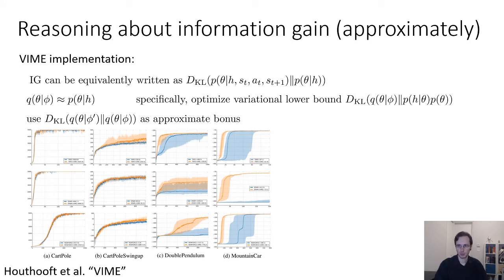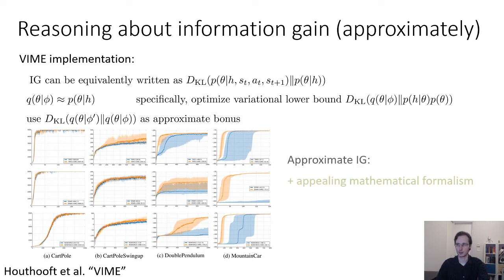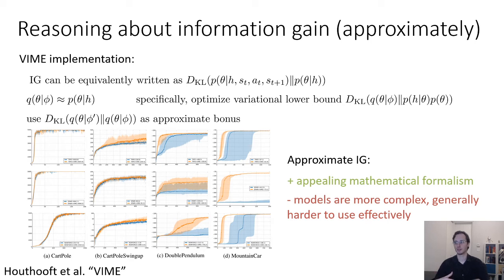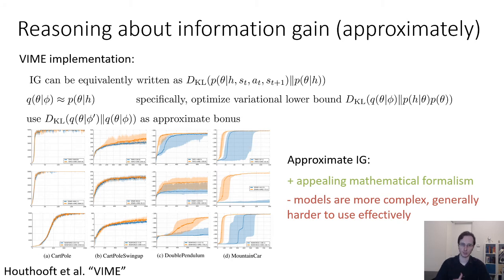In the paper, they show evaluations illustrating that adding this information gain bonus does result in significant gains in exploration performance across a range of reinforcement learning tasks. One nice thing about approximate information gain is that it provides a very appealing mathematical formalism. One downside is that these models are somewhat complex — you have to train entire dynamics models just to get exploration bonuses, and generally it's a bit harder to use these things effectively. So if you can estimate densities, maybe it's easier to use something like pseudocounts, even though these methods have appealing theoretical formalisms.